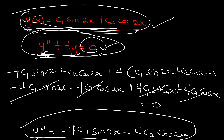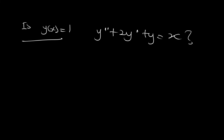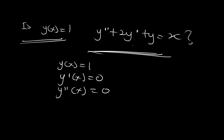Let's try another example. Is y of x equals 1 a solution to the differential equation y'' + 2y' + y = x? We follow the same procedure. We need y', y'', and y. We already have y equals 1, so let's find its derivatives. y' of x gives us zero, and y'' of x also gives us zero.